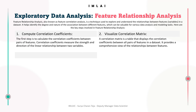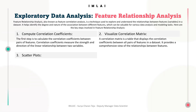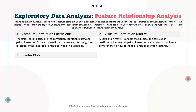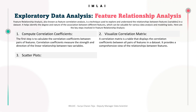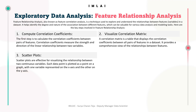The third step is scatter plots. Scatter plots are effective for visualizing the relationship between two continuous variables — each data point is plotted on a graph with one variable on the x-axis and the other on the y-axis. They reveal patterns such as linear, non-linear, or no relationship, and can help identify trends, clusters, outliers, or the absence of a relationship.